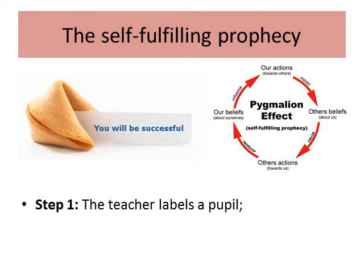Firstly, the teacher labels a pupil — saying, in effect, 'you are a good pupil' or 'you are not so good.' They may not communicate that directly, but they have been measuring the student against the ideal pupil in their mind and found them either meeting or failing to meet the criteria, and so they label them.